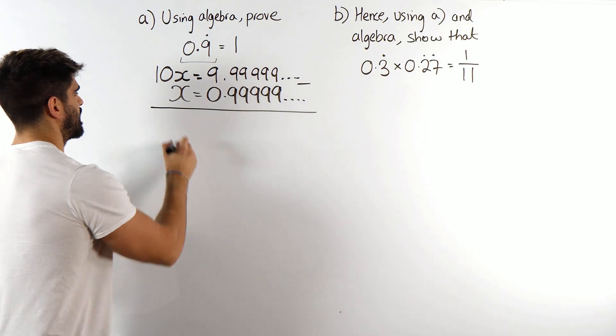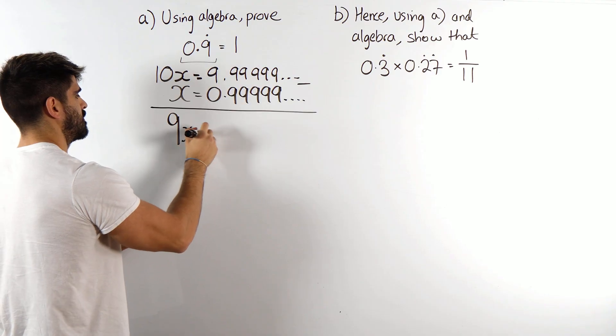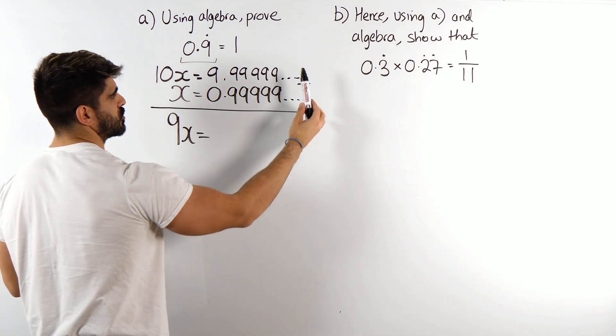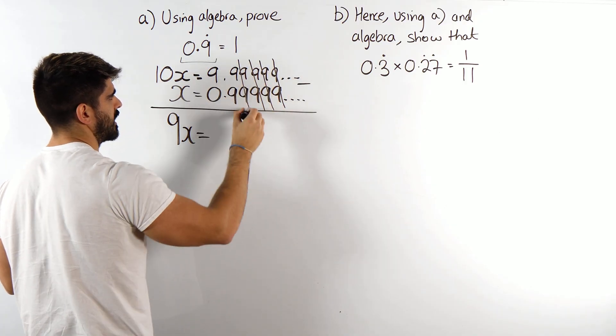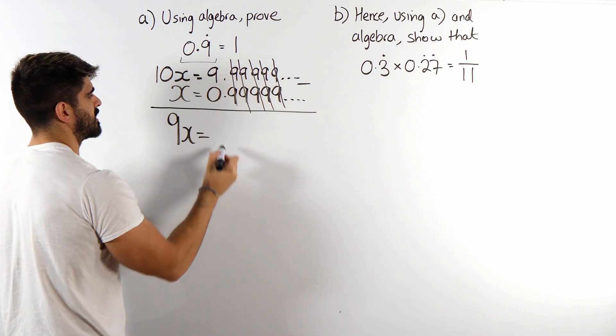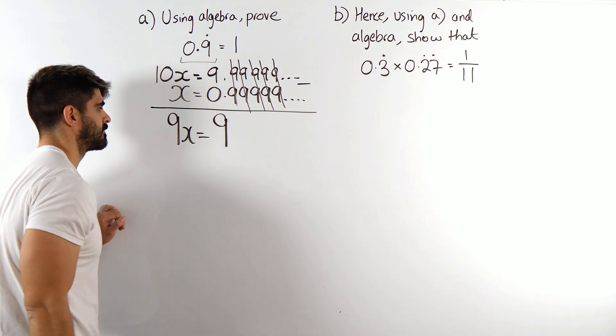So 10x minus x is 9x. Now here, we subtract from right to left. Cancel, cancel, cancel, cancel, cancel. 9 minus 0 is 9. Very simple.